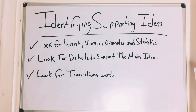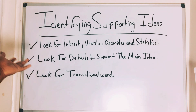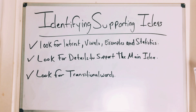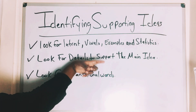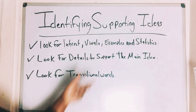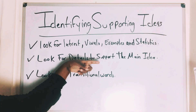Identifying supporting ideas — in my opinion, supporting ideas are like supporting actors or actresses in a film. They support the main idea. Look for visuals, look for examples and statistics the author might provide. Look for details that support the main idea — those supporting actors. Also look for transitional words like 'although,' 'firstly,' 'secondly,' 'lastly' — words like that, because they will help you understand what a supporting idea is.